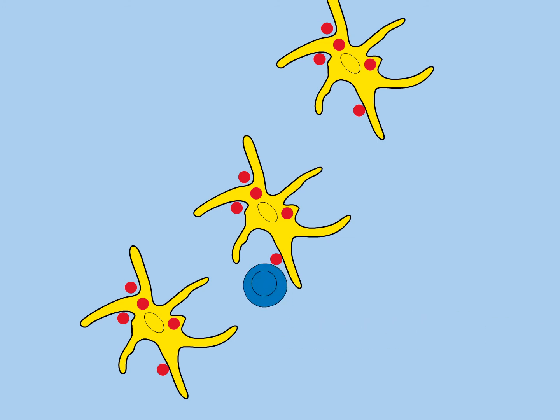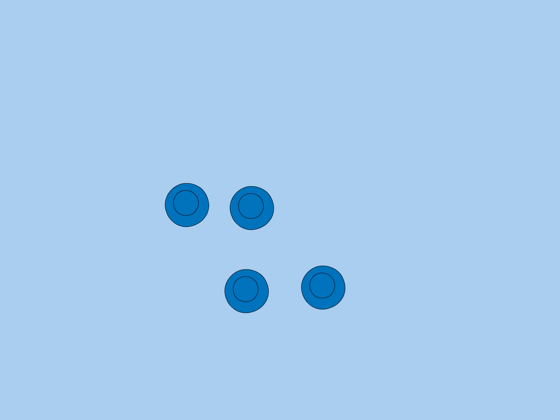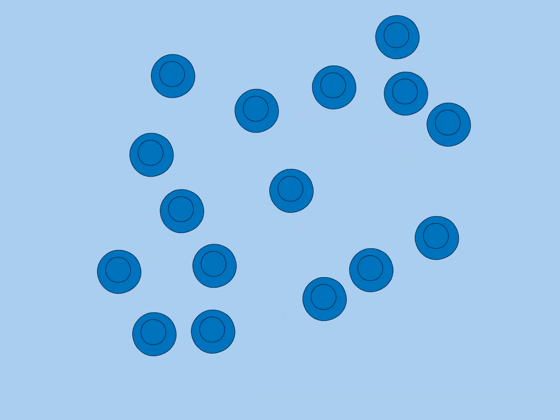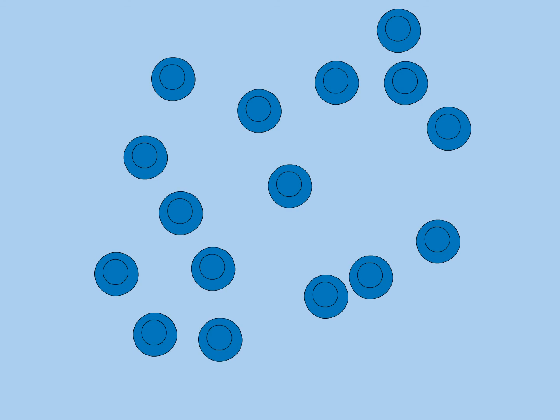T-cells that do recognize their specific antigen become activated and both proliferate and differentiate into effector cells.